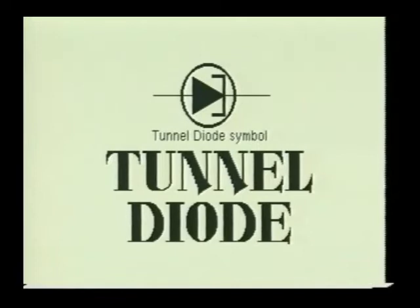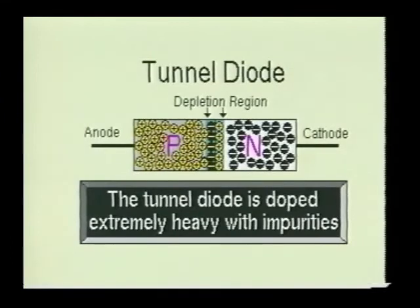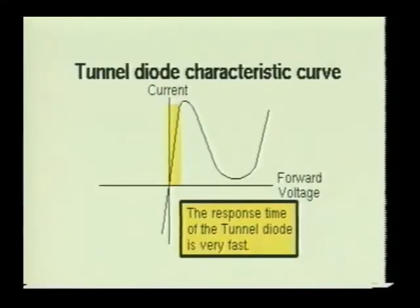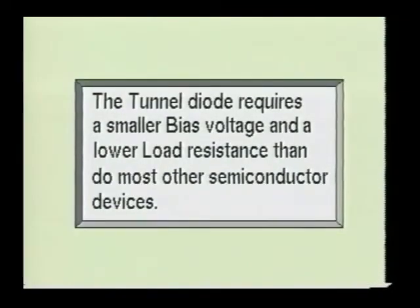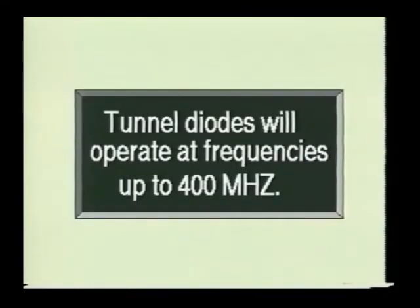The next semiconductor device we shall examine is the tunnel diode. The semiconductor material in the tunnel diode is doped extremely heavily with impurities, which gives the tunnel diode a very narrow depletion region. As seen on this graph, the tunnel diode has a very fast response to input voltages. These devices are used almost exclusively in high-frequency circuits. Tunnel diodes may be used as amplifiers, oscillators, or as switching devices. Because of the fast response time, the tunnel diode requires a smaller bias voltage and a lower load resistance than most other semiconductor devices. Tunnel diodes are designed to operate in the frequency range of 300 to 400 megahertz.